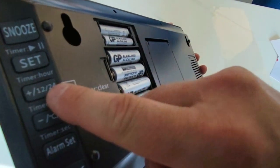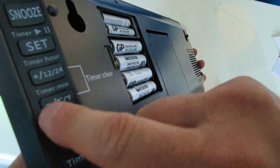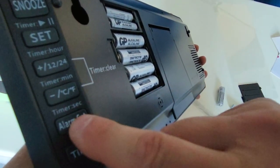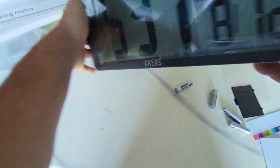Snooze set, plus and minus, your timer, your hour, your Fahrenheit Celsius switcher, your alarm set. And then this is your stopwatch basically.